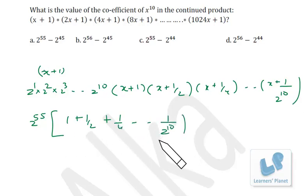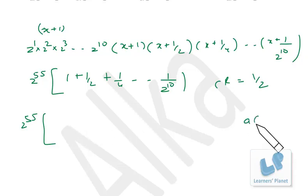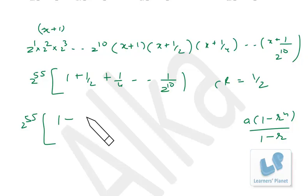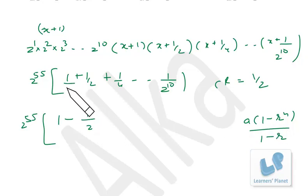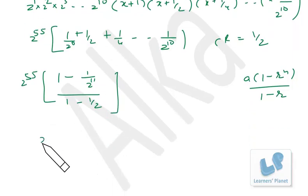This is a geometric progression with common ratio 1/2. Using the formula a(1 − r^n)/(1 − r), where a = 1, r = 1/2, and n = 11 terms (from 2^0), the sum is (1 − (1/2)^11) / (1 − 1/2), which simplifies to (2^11 − 1) / 2^10.